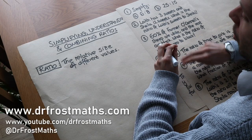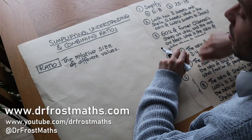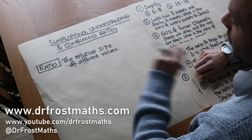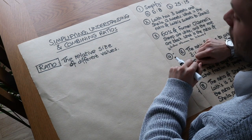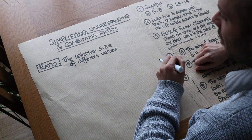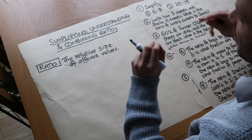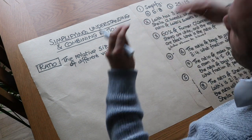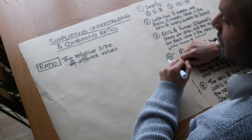Hello and welcome to this video on simplifying, understanding and combining ratios. Ratios on a simple level is just the relative size of different values. So if I said I have three times as many red sweets as blue sweets, I'm expressing a ratio because I'm talking about the relative size of my number of red sweets and number of blue sweets.